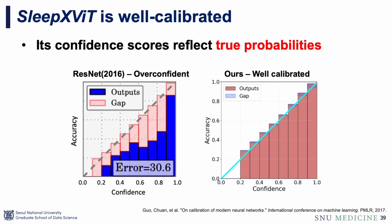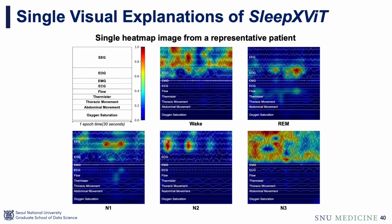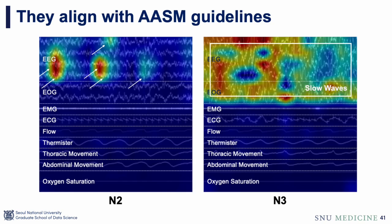Even if you have the confidence score, it's important to understand why the model has high or low confidence. Here, we present visual explanations highlighting the model's rationale behind each prediction. These are heatmaps on the input PSG image from a representative patient. To explain in detail — in magnified N2 and N3 images, they generally align with AASM guidelines. For instance, our model highlights sleep spindles and K-complexes in the N2 stage, and prominently highlights slow waves in the N3 stage.